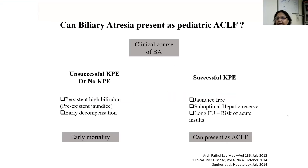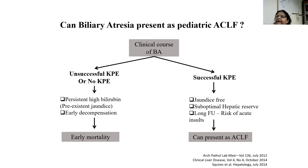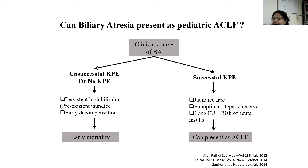Do we need a modified definition? Can biliary atresia present as pediatric ACLF? Why can't a successful Kasai portoenterostomy patient who doesn't have pre-existing jaundice present as ACLF? This has not been included in the definition as yet because in the adult definition they do not include pre-existent jaundice. Our patients — mostly those who are unsuccessful KPE — will have jaundice. But the successful KPE patient may not have jaundice and may have suboptimal hepatic reserve, putting them at risk of acute insults and potentially presenting as ACLF.